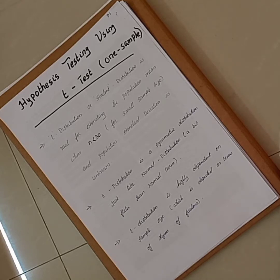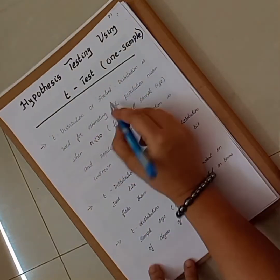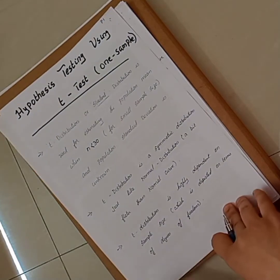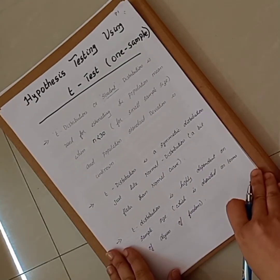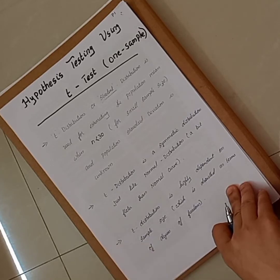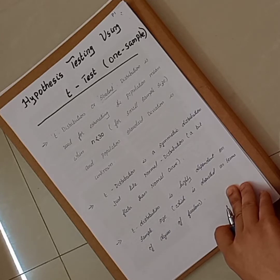Before moving on to the problem, let me tell you what is meant by T-distribution, also called student distribution. It is actually used for estimating the population mean when n is less than 30, that is for small sample size, and population standard deviation is unknown.